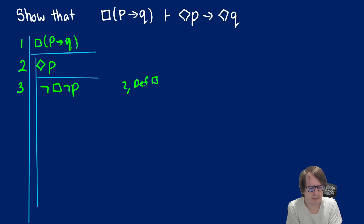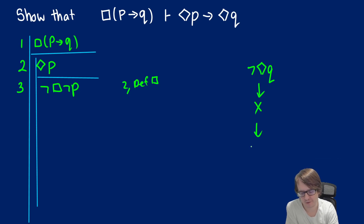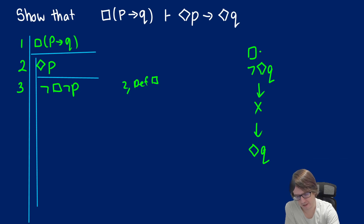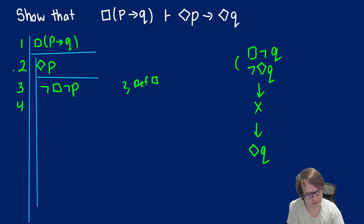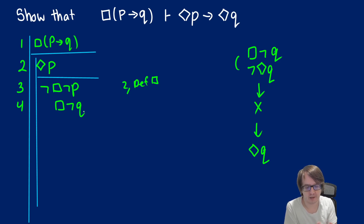We have not box not P and we need to get diamond Q. The easiest approach: if we can assume not diamond Q and find a contradiction, we get not not diamond Q, which is the same as diamond Q. Since not diamond Q is equivalent to box not Q, in line four we'll make that assumption — box not Q — and essentially want to get not box not P or box not P to derive a contradiction.